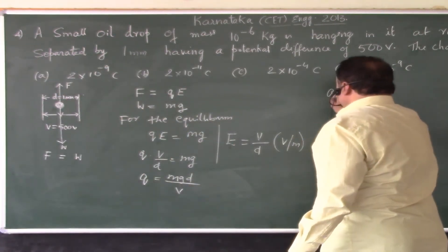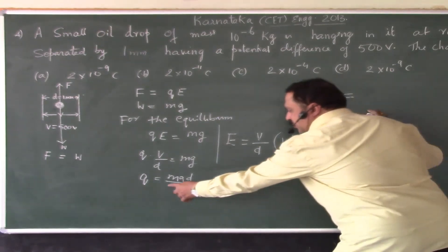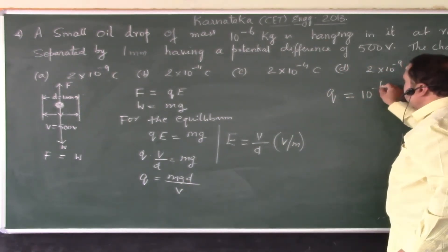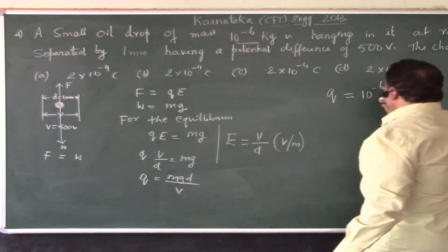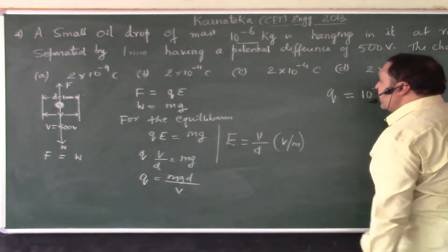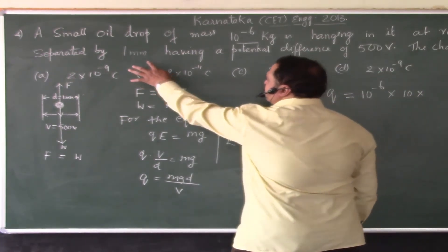It becomes a direct substitution problem. Therefore, Q equals the charge on the oil drop. Mass of the oil drop is given to be 10 to the power of minus 6 kg, into g is acceleration due to gravity, it is 10 meters per second square, into d, the distance between the plates is 1 millimeter.